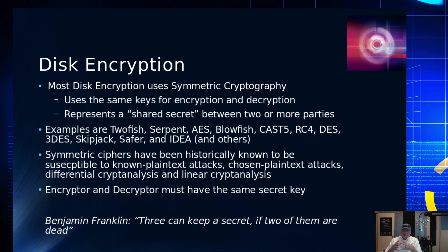Symmetric cryptography uses the same key to encrypt and decrypt the file. The reason it has to use that is because it's basically dynamic — it's occurring on the fly, and it's basically a shared secret. If you want to be able to give an encrypted file that is protected by a symmetric key, you have to give that key to someone else in order for them to decrypt the file. Some examples of that are: Twofish, Serpent, AES,